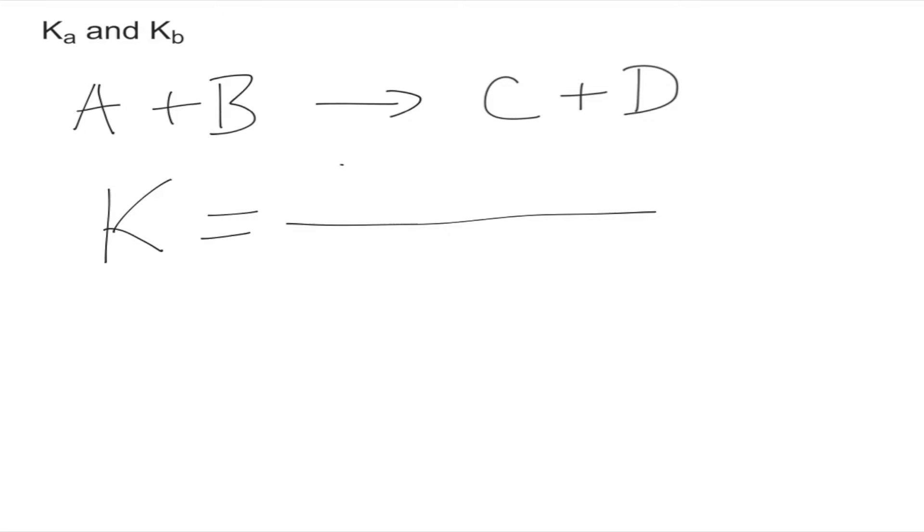In this case it will be the concentration of C times the concentration of D over the concentration of A times the concentration of B. And that is how you find any K constant. So now let's get into the particular cases.